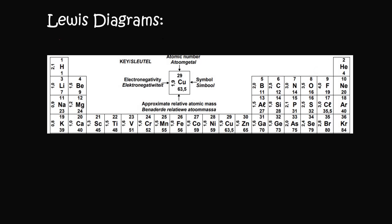Next we can do neon. Neon is in group three, four, five, six, seven, eight. So you first do four separate ones and then pair them all up. Neon is completely surrounded with pairs of electrons. Whereas with sulfur, which we did previously, there were some electrons that were unpaired — but you don't need to worry too much about that, I'm just highlighting it for now.